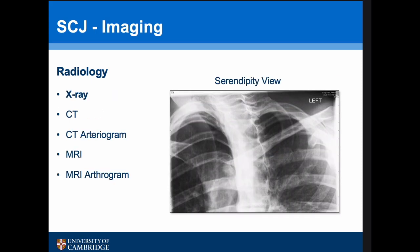This is an X-ray known as a serendipity view — it's called that because it's serendipitous if it actually shows any pathology. A plain X-ray of the sternoclavicular joint really isn't of much use, mainly because the cervical spine sits behind it, so plain X-rays are of no use whatsoever.